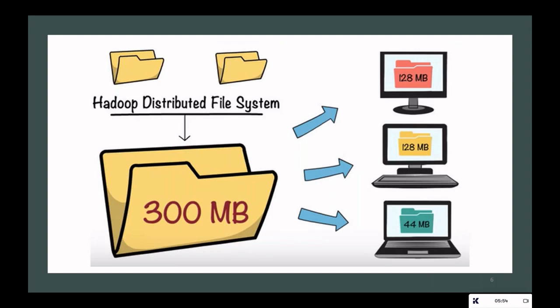To store and process big data we have various frameworks such as Cassandra, Hadoop, and Spark. Hadoop stores and processes big data using a distributed file system known as the Hadoop Distributed File System. A huge file is broken down into smaller chunks stored across various machines, with copies made that go into different nodes. This way data is distributed across three machines, so if one machine fails, your data is safe on the others.